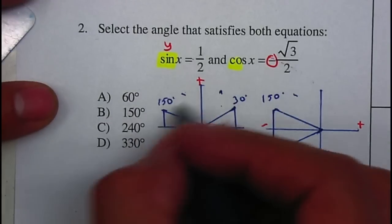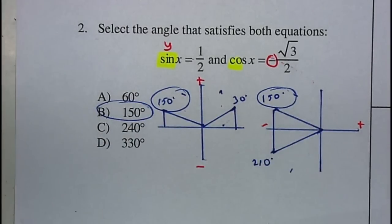So the one that satisfies both equations is 150 degrees, so therefore it will be letter B.